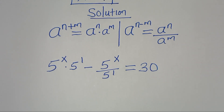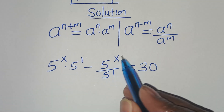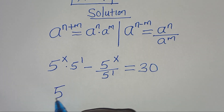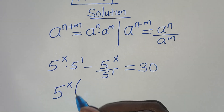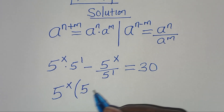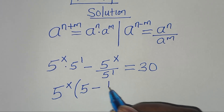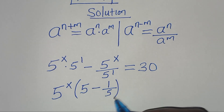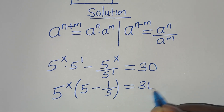Now since 5 to the power of x is common here, we can factor out 5 to the power of x into the parenthesis. We have 5 minus 1 over 5. This is equal to 30.